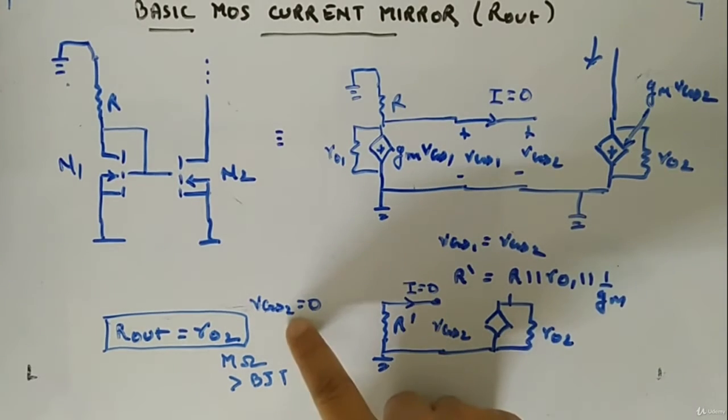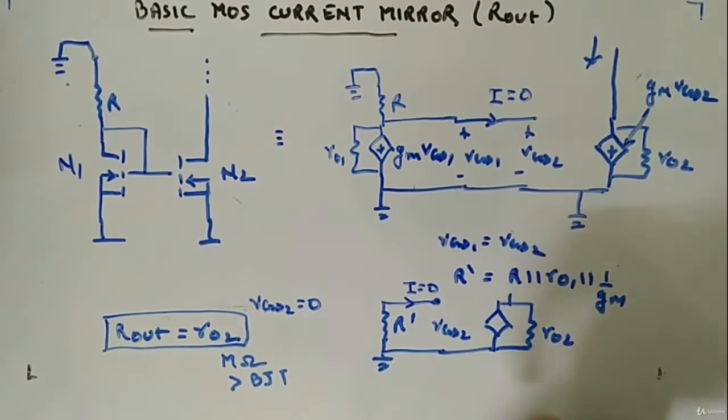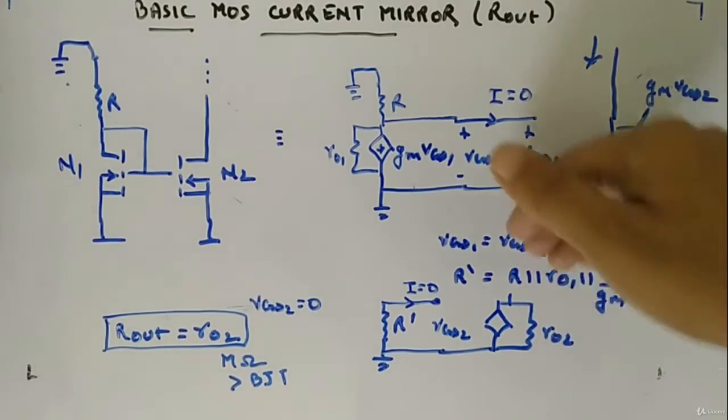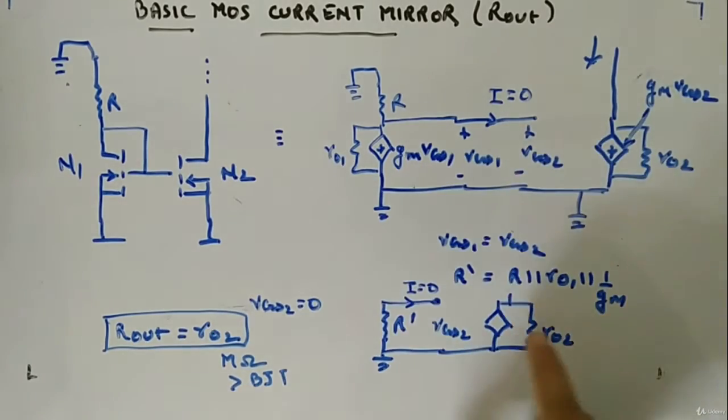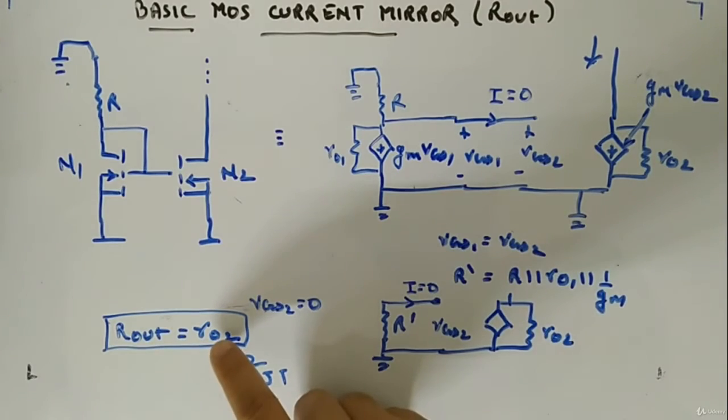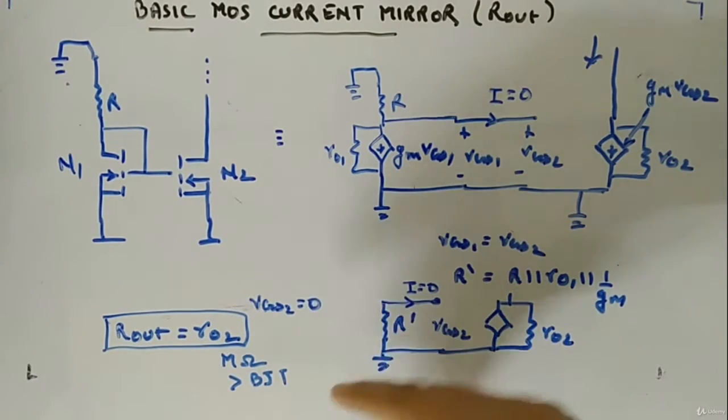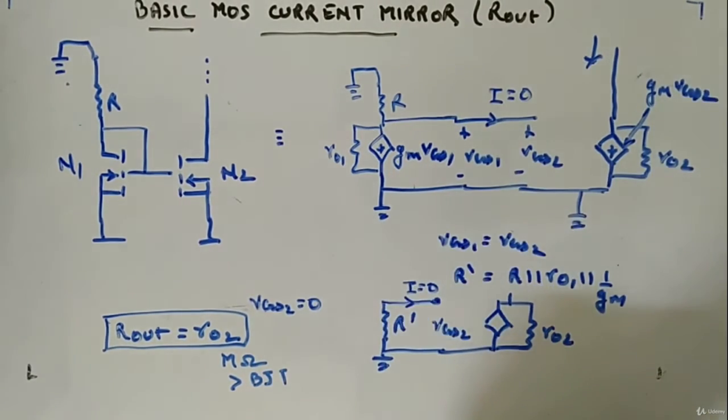That means this will be open circuit. And from here if you will look, the parallel combination will be RO2. Generally the value of RO2 will be in mega ohms and more than BJT. The output resistance will be more than the output resistance of BJT, plus it will be mega ohms range.